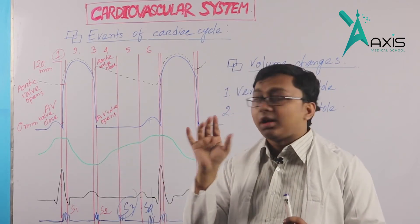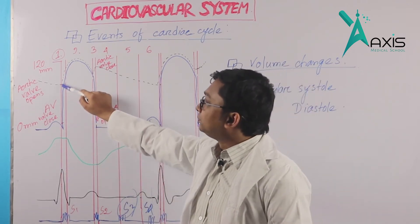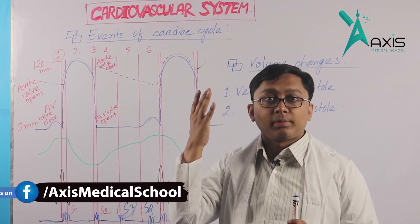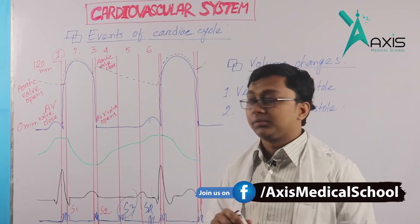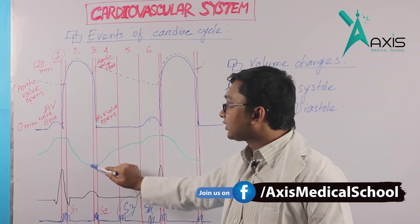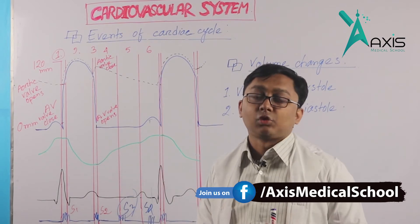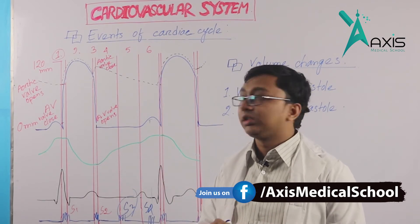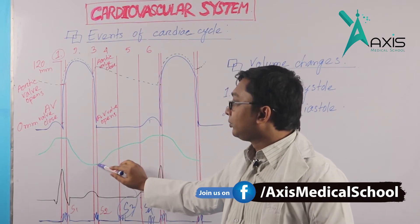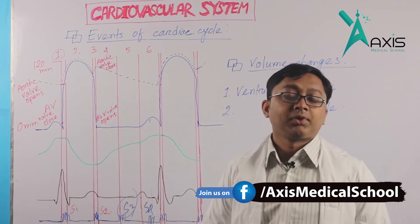Then the aortic valve opens. When blood is ejected, the ventricle empties. During the ejection phase, the left ventricle volume reduces.